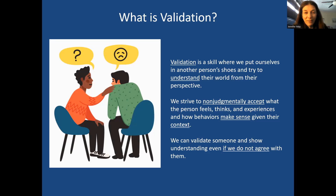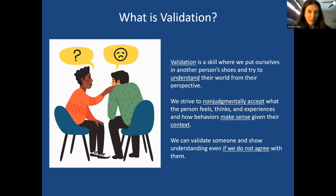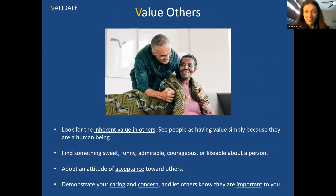It's also why validation is the V in the GIVE skill, which is about keeping good relationships. We could also validate somebody even if we don't agree with their behavior. So we could say, I don't like the fact that you punched this guy, but I can understand how angry you were and why you felt like doing it. I don't agree with the action, but I could understand the motive. So we can disagree but also validate at the same time.